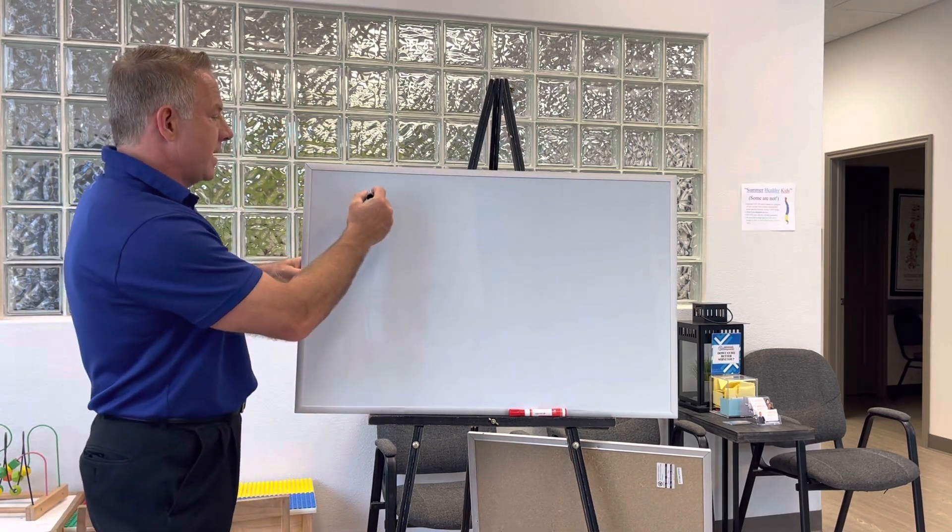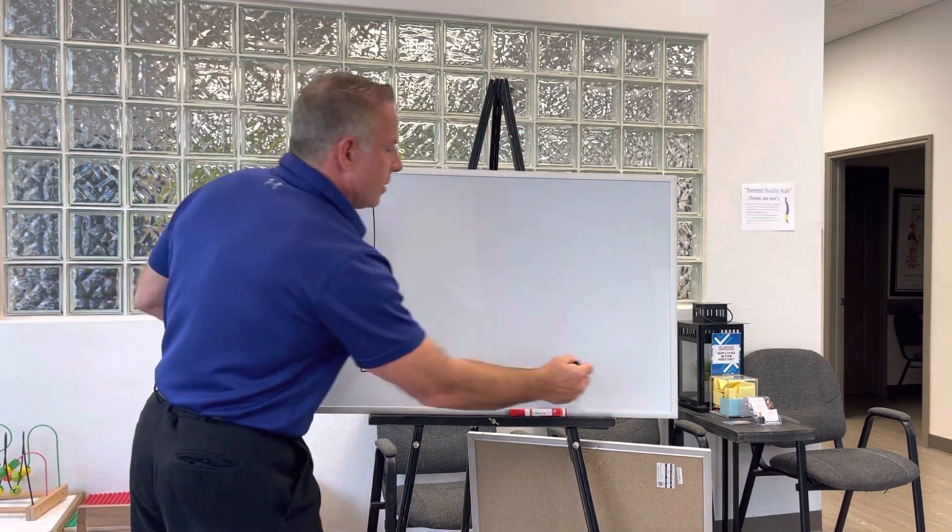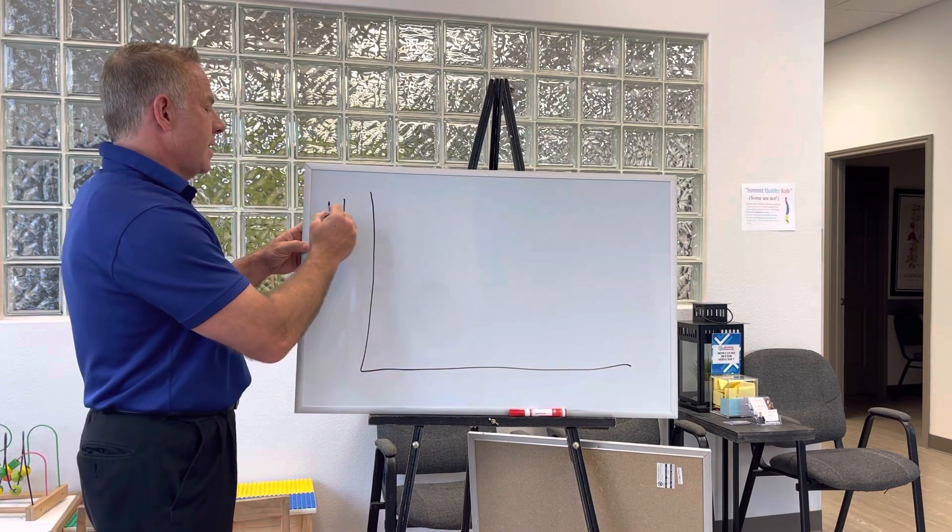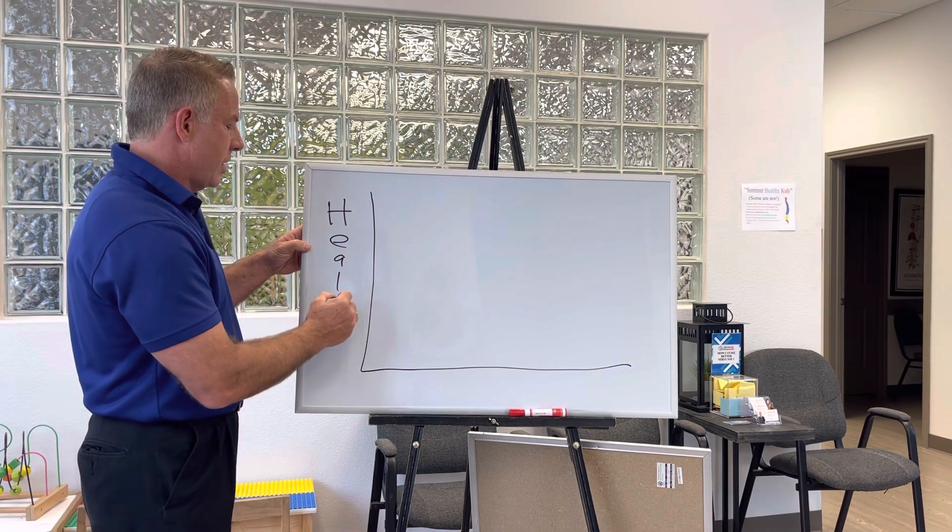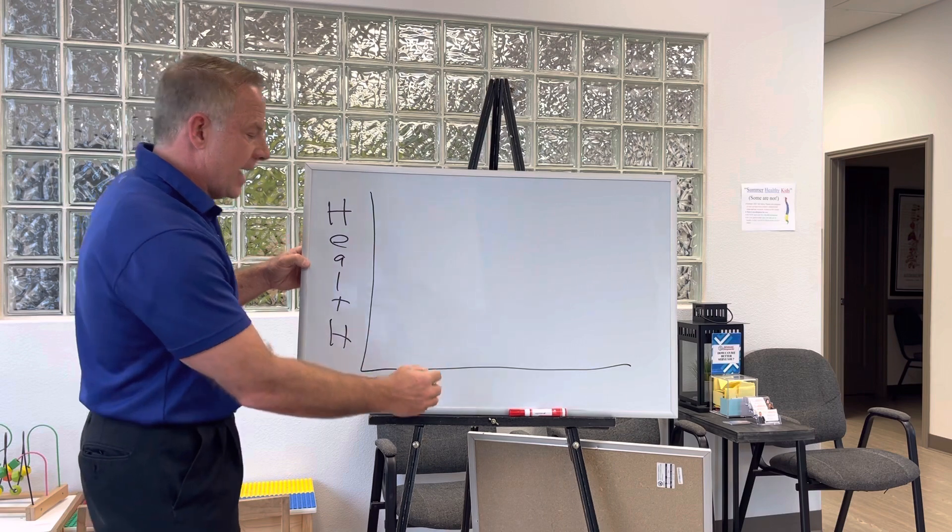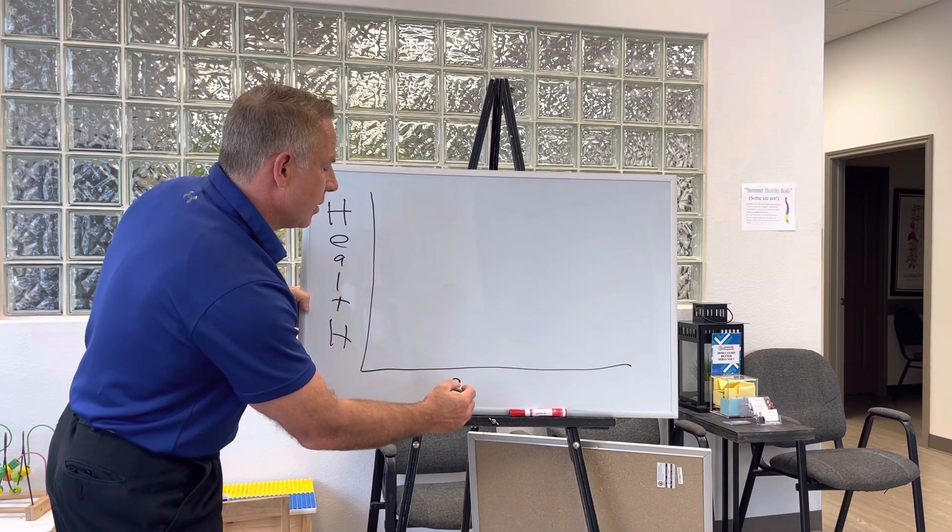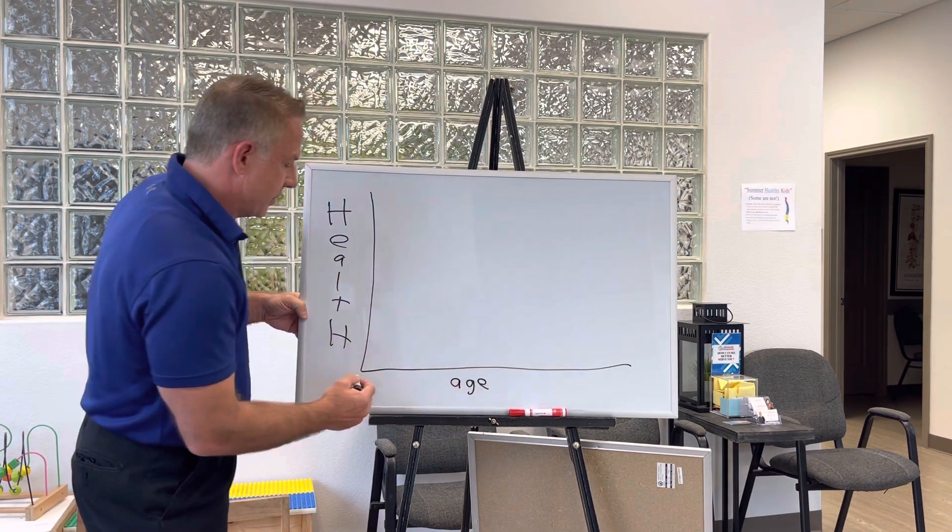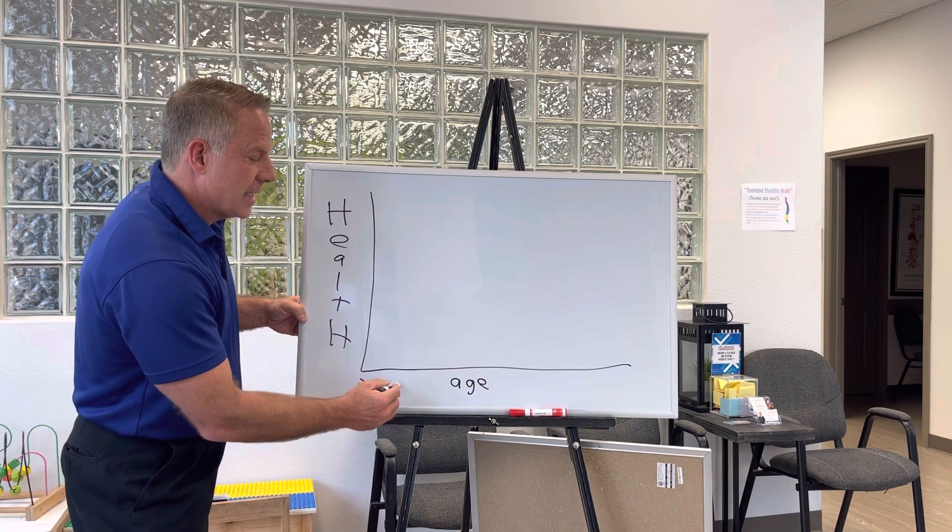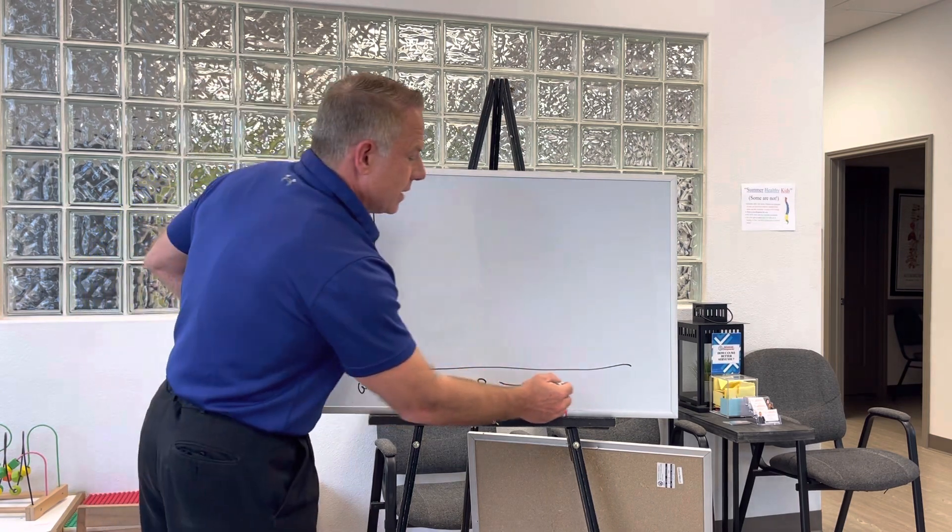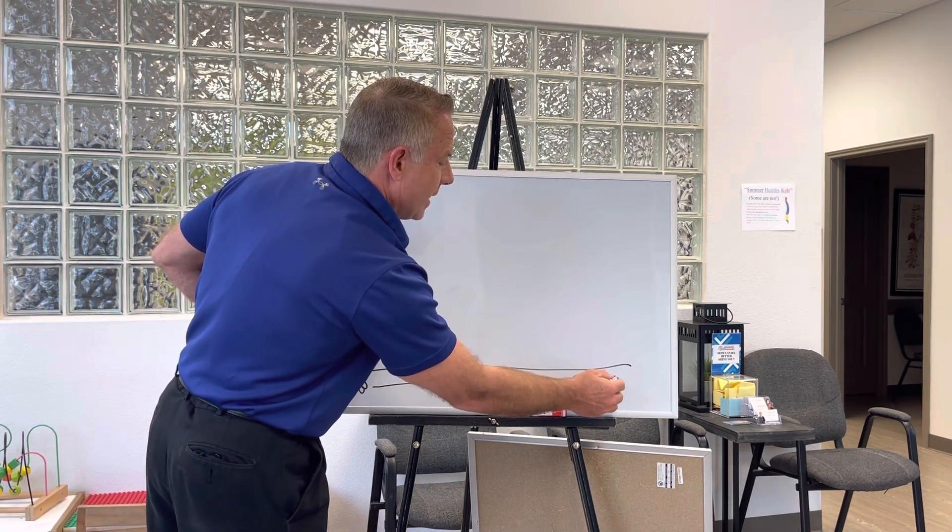So if we look at this and we look at on this y-axis, we look at health and then on the x-axis we look at age for most people. So this would be birth and as the person gets older until they get into older age over here.